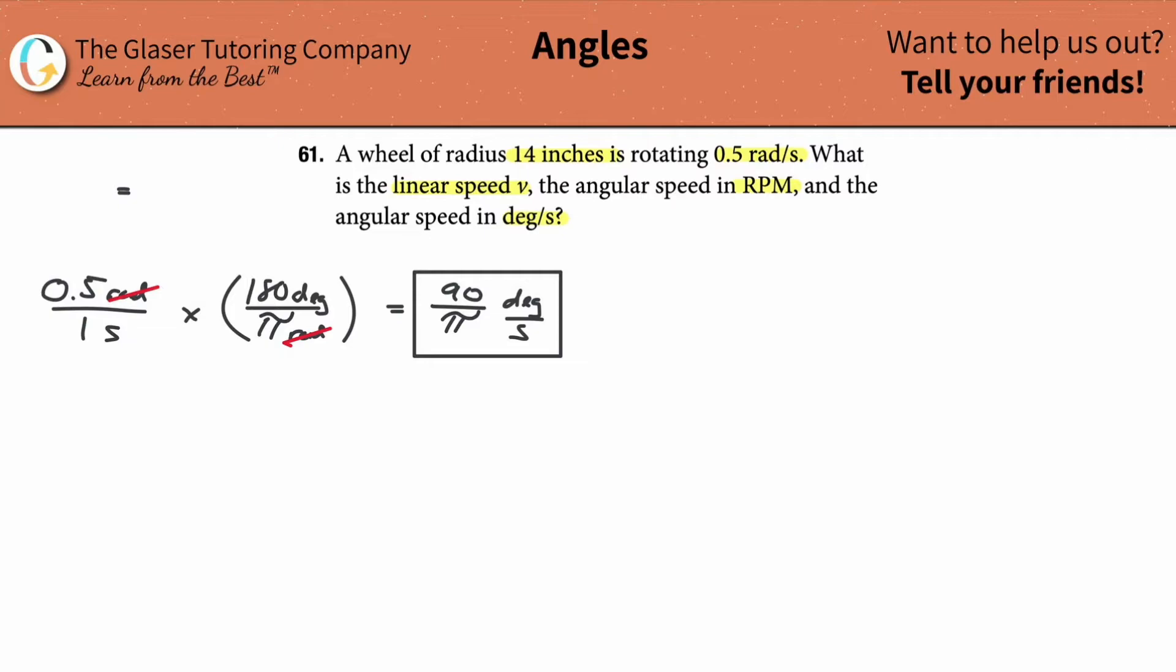So why don't we just do it, right? So 90 divided by then pi. So about 28.6. So this is equivalent to approximately 28.6 now degrees per second.